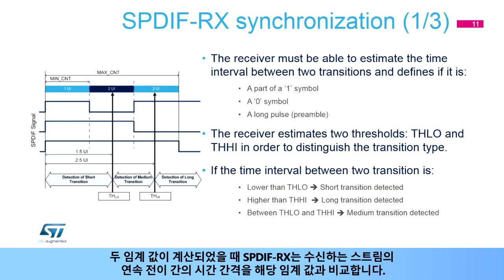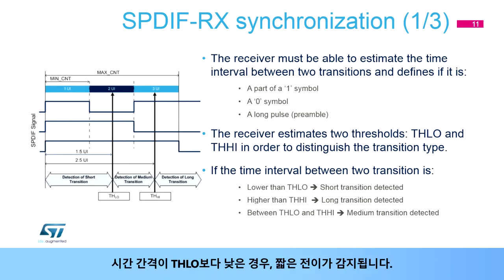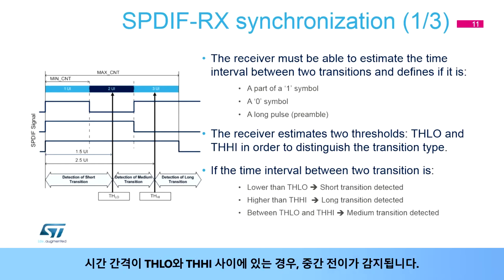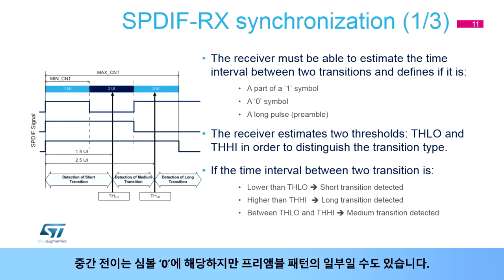When both thresholds have been computed, the SPDIFRX compares the time interval between consecutive transitions of the incoming stream to those thresholds. If the time interval is lower than TH_low, a short transition is detected — note that two consecutive short transitions correspond to the symbol one, but can also be part of the preamble pattern. If the time interval is between TH_low and TH_high, a medium transition is detected, corresponding to the symbol zero, but can also be part of the preamble pattern.